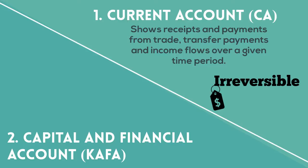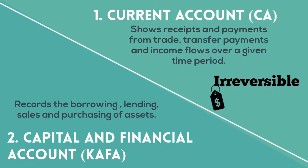The CAFA on the other hand records the borrowing, lending, sales and purchasing of assets for that country. Now unlike the current account, these transactions are reversible. This is because once these transactions have occurred they can be undone in the future — for example, an asset that has been bought can be sold again.